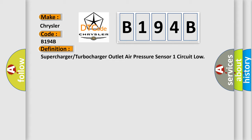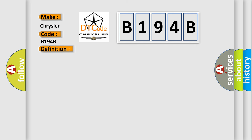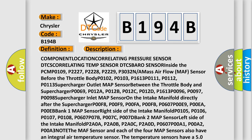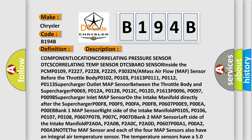And now this is a short description of this DTC code. The component location includes correlating pressure sensor DTCs, correlating temperature sensor DTCs, and a BARO sensor inside the PCM.